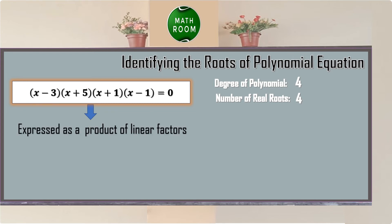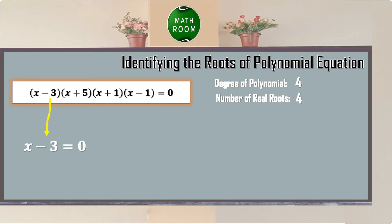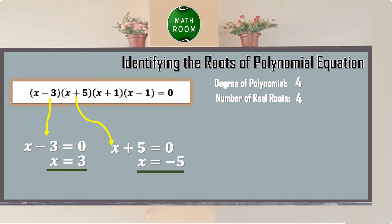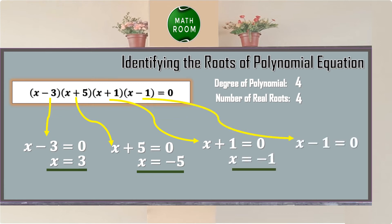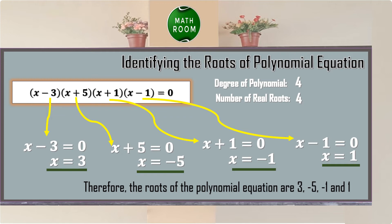Using the zero product property, we equate each factor to 0. From x minus 3 equals 0, we get x equals 3. From x plus 5 equals 0, we get x equals negative 5. From x plus 1 equals 0, we get x equals negative 1. From x minus 1 equals 0, we get x equals positive 1. Therefore, the roots are 3, negative 5, negative 1, and 1.